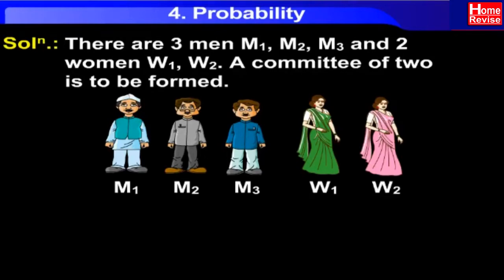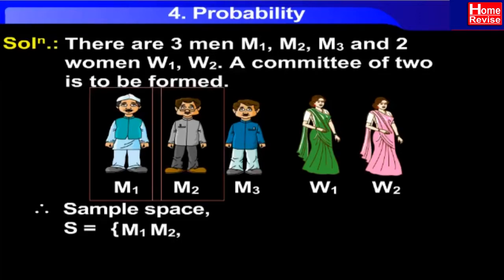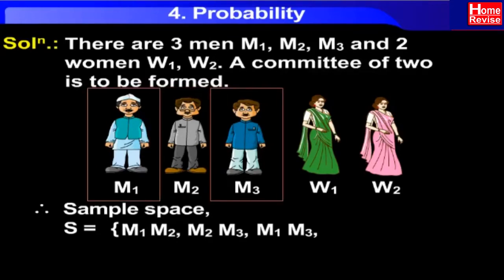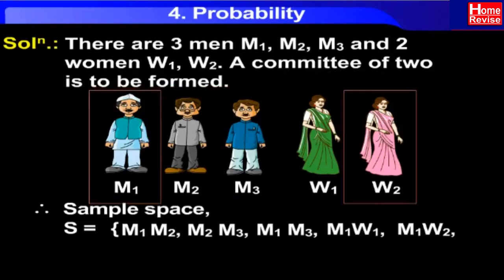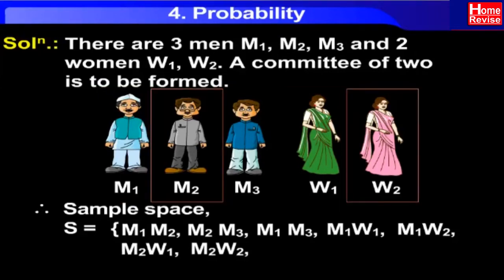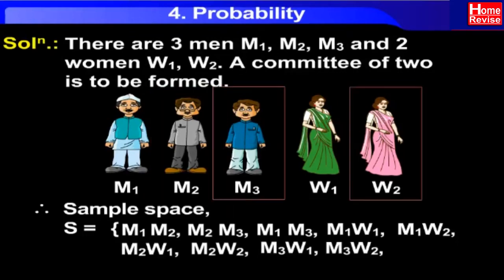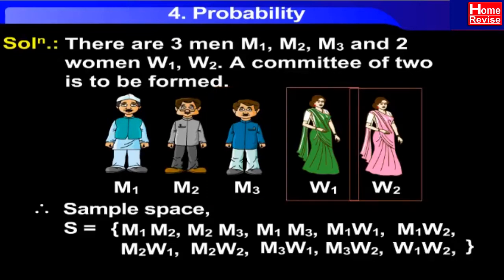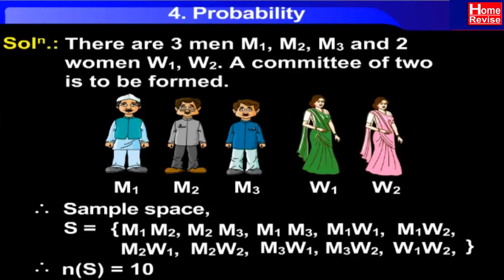A committee of two is to be formed. Therefore, the sample space S = {M1M2, M2M3, M1M3, M1W1, M1W2, M2M3, M2W1, M3W2, M3W1, W1W2}. Therefore, N(S) = 10.